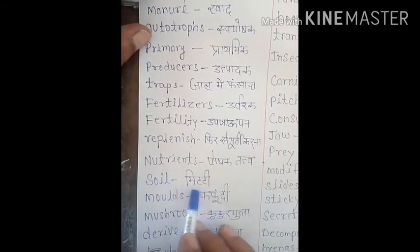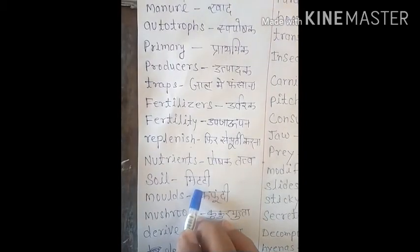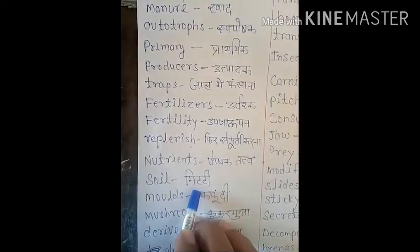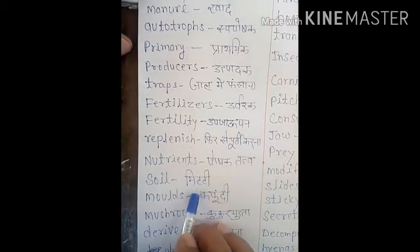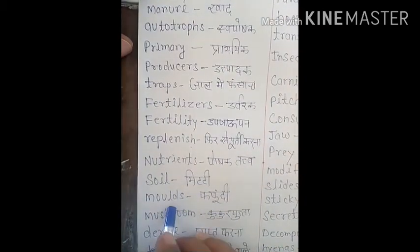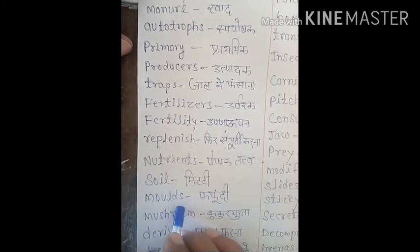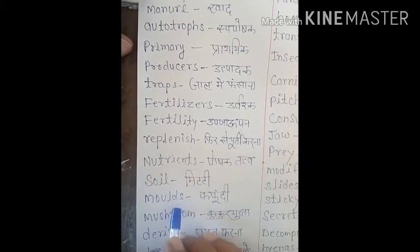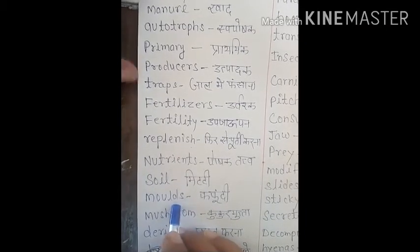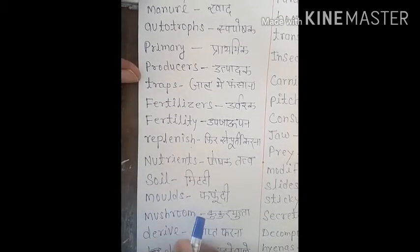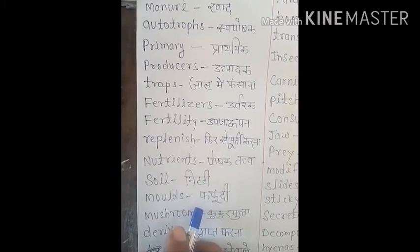Next word is 'soil', S-O-I-L. Soil means 'mitti'. Kaafi easy word hai. Next word is 'molds', M-O-U-L-D-S. Molds means 'fafundi' hoti hai.